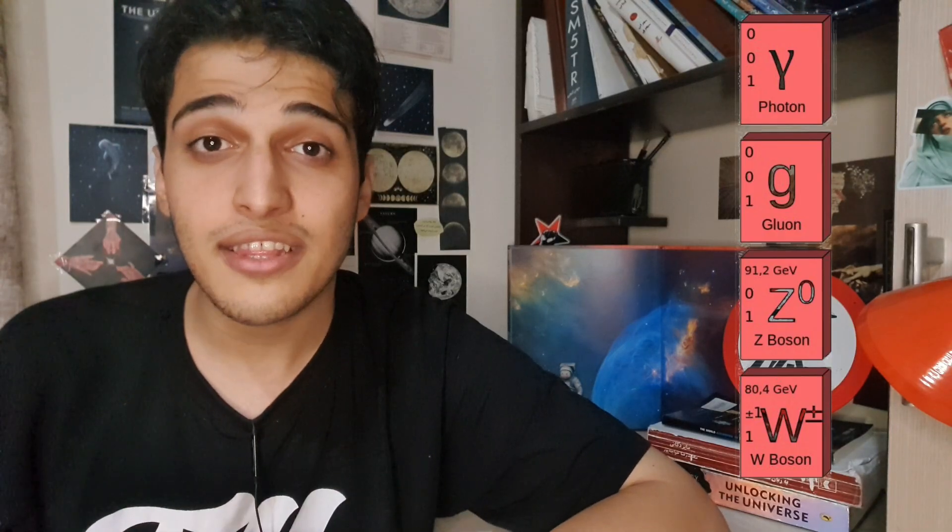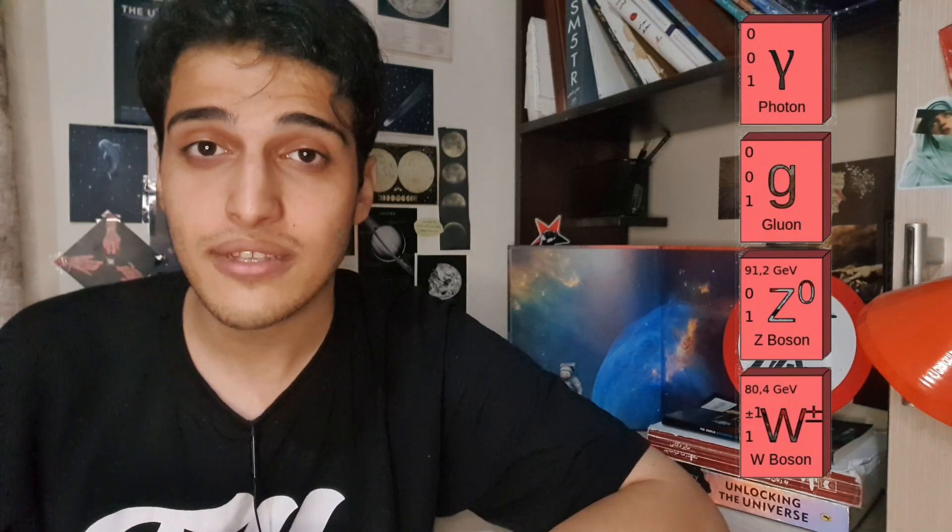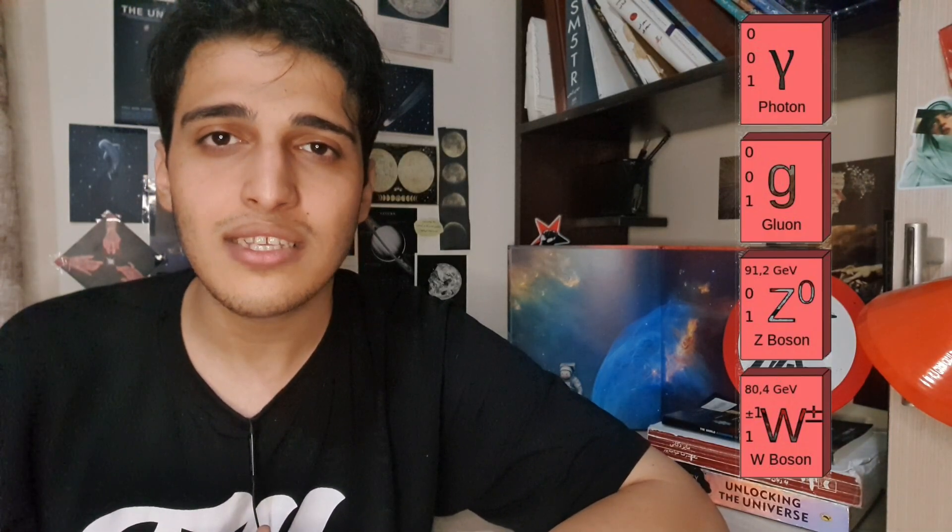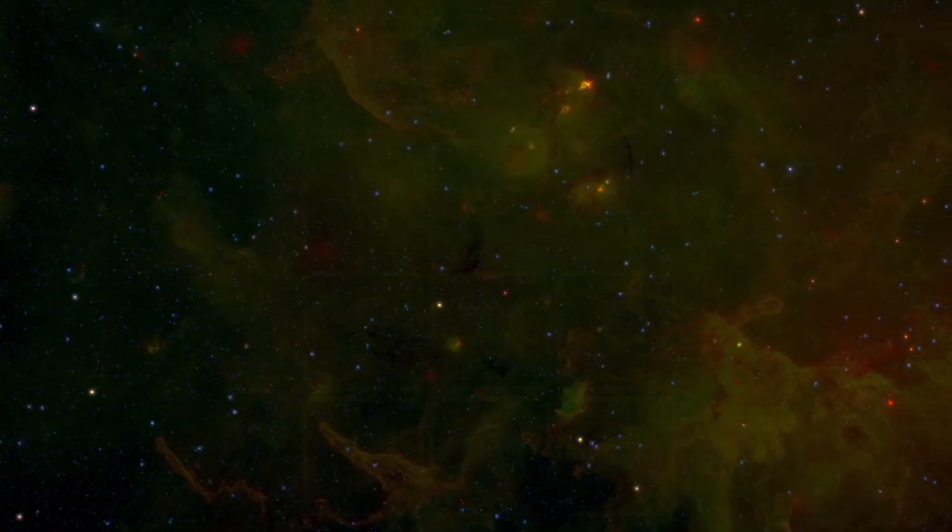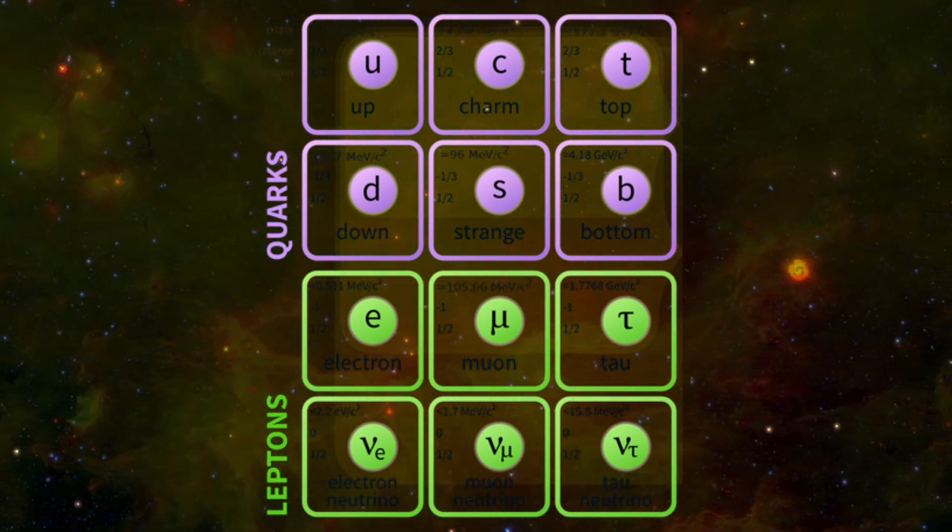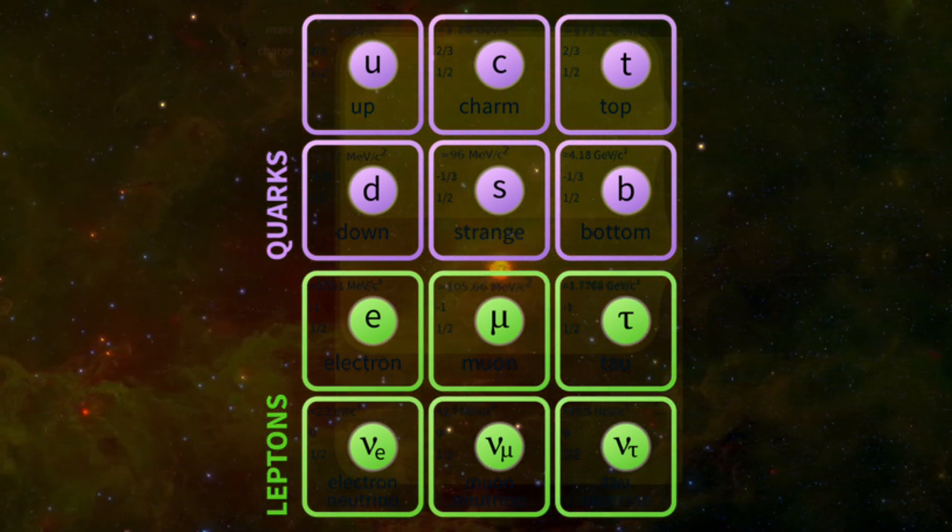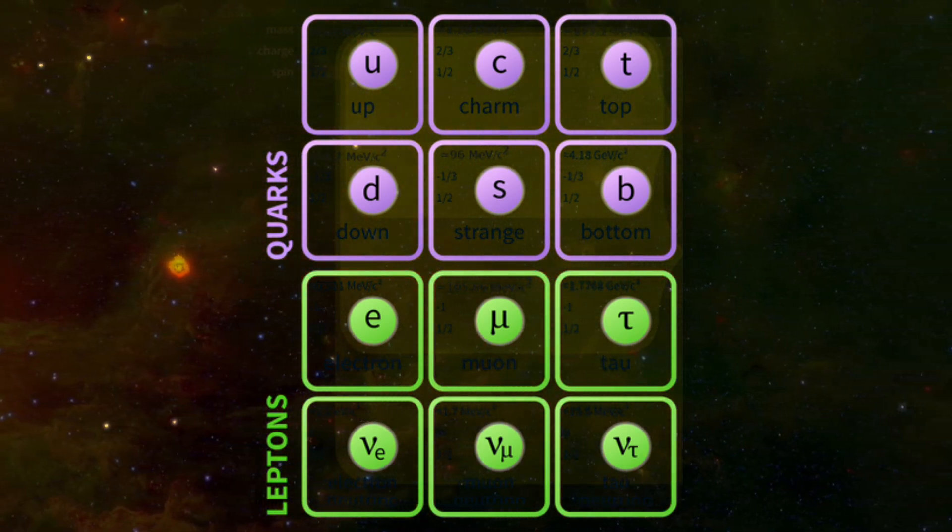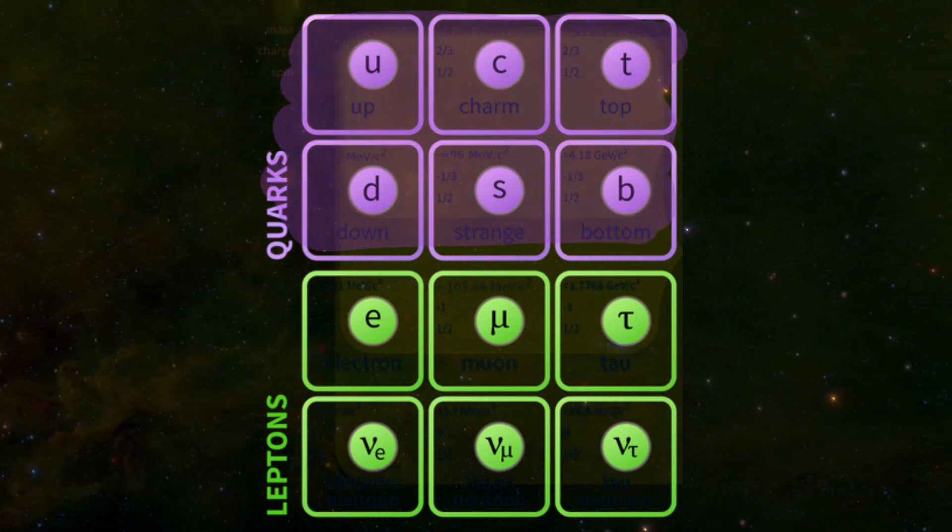But until the day scientists prove the existence of graviton, we'll define the bosons as the force-representative particles. On the other hand, fermions represent mostly the particles that are ruled by these forces. Fermions are 12 particles that are divided into two groups of quarks and leptons.